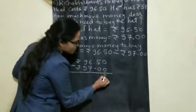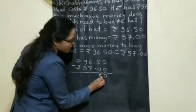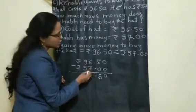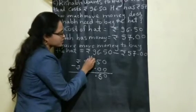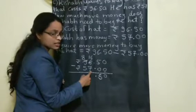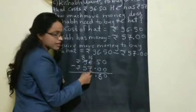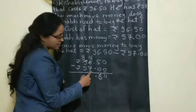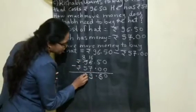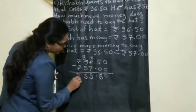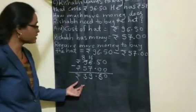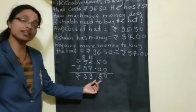0 minus 0 is 0. 5 minus 0 is 5 — dot as it is. Can you subtract 7 from 6? No — it will become 16, and here how much left? 8. 16 minus 7 is 9. 8 minus 5 is 3. Write the rupees symbol. So how much extra money is required to buy the hat? Rupees 39.50.